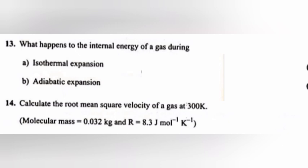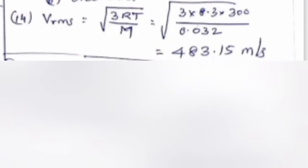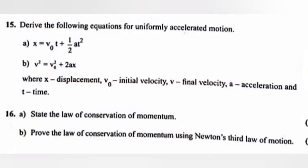Question 14: Calculate the root mean square velocity of a gas at 300K. Molecular mass equals 0.032 kg and R equals 8.3 J mol⁻¹ K⁻¹. Answer: vrms equals root of 3RT by M equals root of 3 into 8.3 into 300 by 0.032 equals 483.15 meter per second.